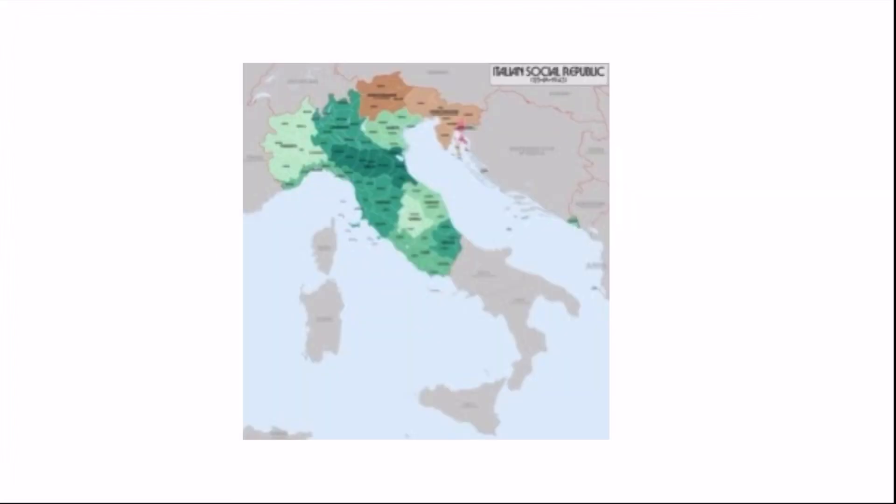Its government was gone. The Allies continued to push up north into the southern half of the Italian Peninsula, but the northern half was occupied by Nazi Germany and turned into a puppet known as the Italian Social Republic. And here it is.